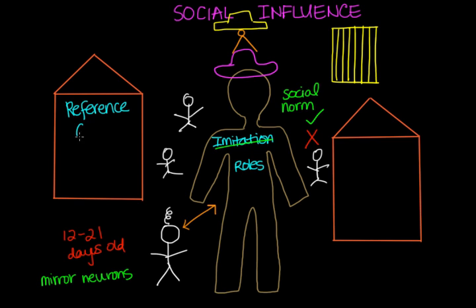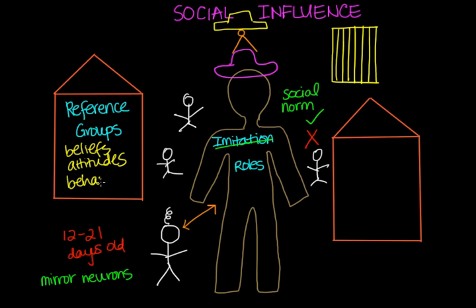Moving on to group influence, we have reference groups. Reference groups is a term from social psychology identifying the group to which people refer or make reference when evaluating themselves — any group whose beliefs, attitudes, or behaviors a person refers to. We are constantly looking for external groups that align with our own beliefs, attitudes, and behaviors, and we refer to them when we want to form or influence our own views. For example, someone may refer to a social science students reference group when deciding what political party to vote for, or a feminist reference group when deciding whether to change their name after marriage.